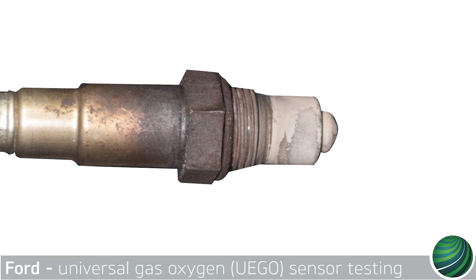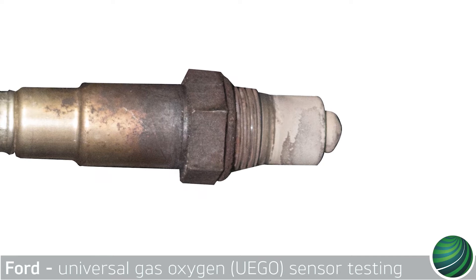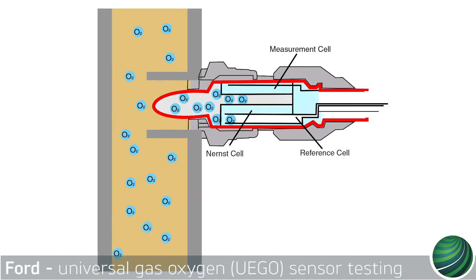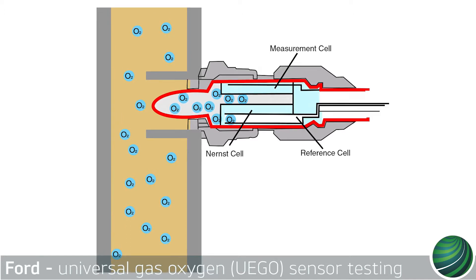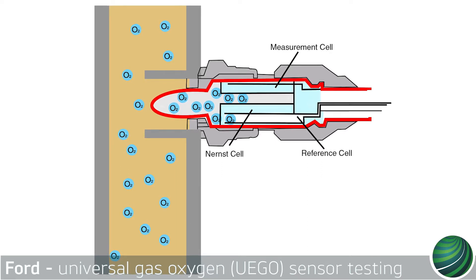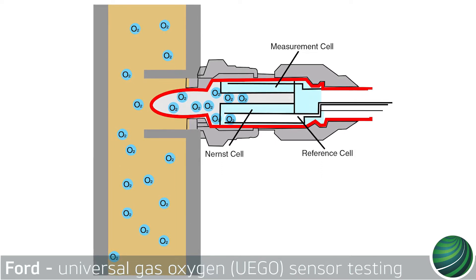UEGO sensors operate differently than traditional oxygen sensors. UEGO sensors are wideband oxygen sensors containing a pump cell operated by the powertrain control module, or PCM. The PCM uses the current required to operate the pump to determine the air-fuel ratio.